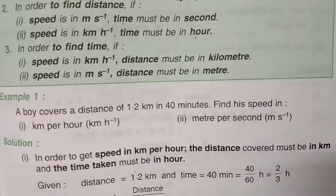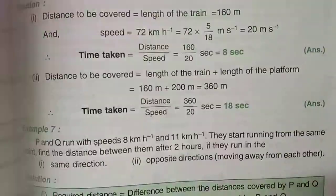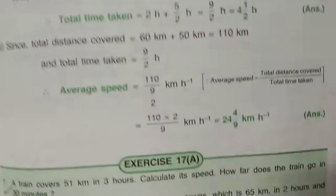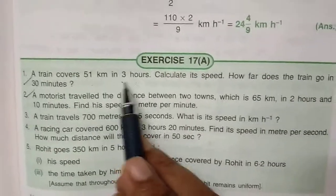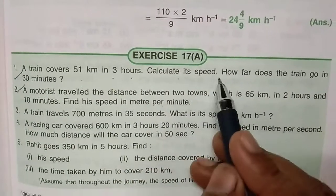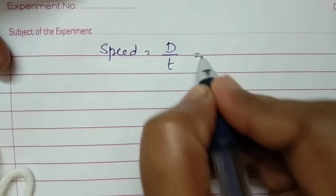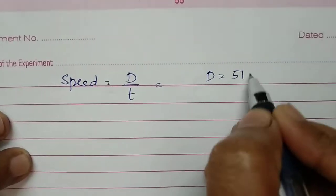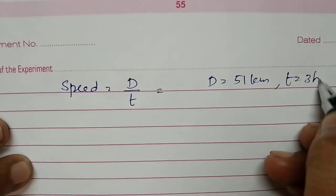Now we will move on to some questions. First, we discuss some exercise questions. A train covers 51 kilometers in 3 hours. Calculate its speed. You can easily write speed equals — what is the formula? — distance divided by time. Distance is given as 51 kilometers and time equals 3 hours.